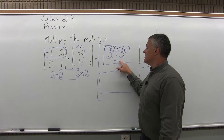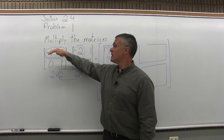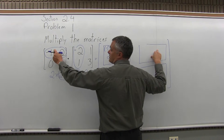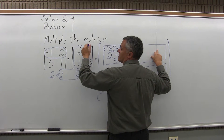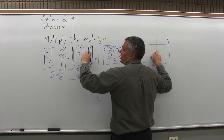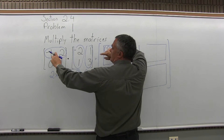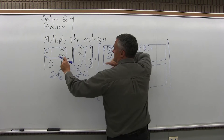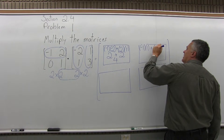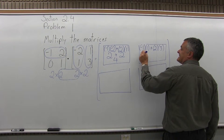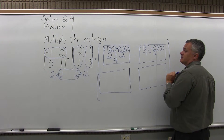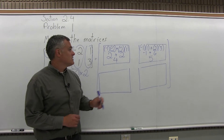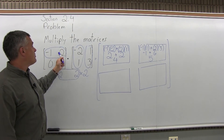That answer of 4 goes in the top row, first column of our answer—we got that by multiplying the top row and first column from the problem. The next box, in the top row and second column, comes from multiplying the top row of the first matrix times the second column of the second matrix: negative 1, 2 times 1, 3. First times first is negative 1 times positive 1, added to second times second, which is 2 times 3. Negative 1 times positive 1 is negative 1, and 2 times 3 is positive 6. Negative 1 plus positive 6 gives 5. That's the top row of the answer.